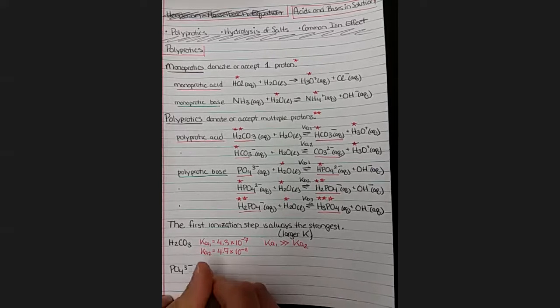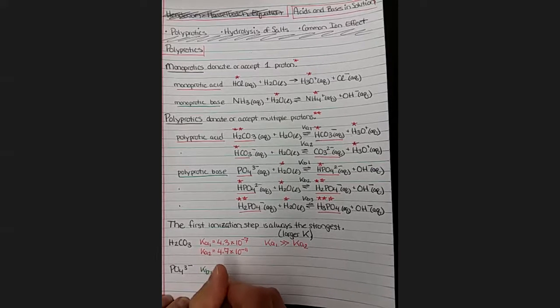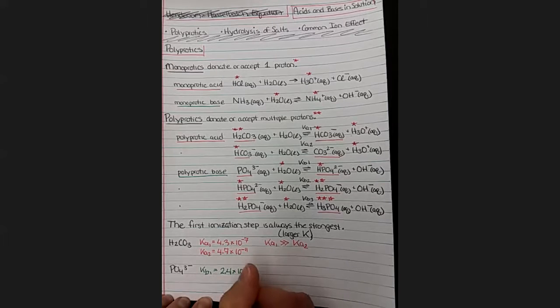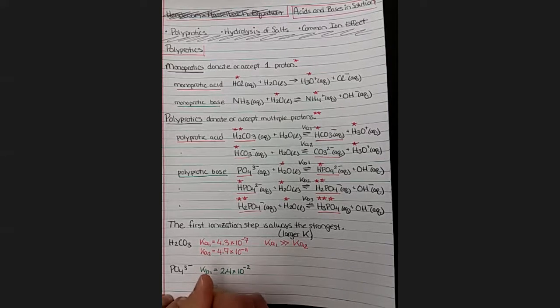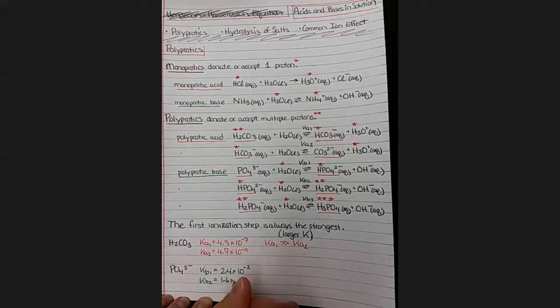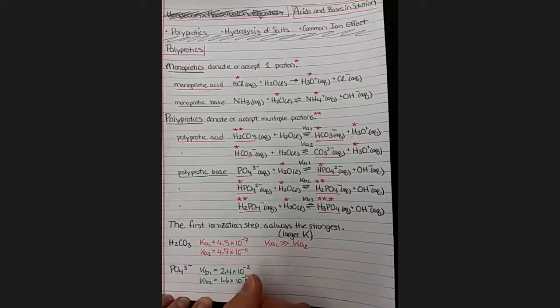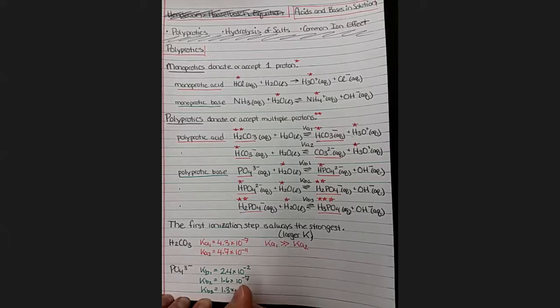And for the phosphate, the first proton we accept, the KB1 is 2.4 times 10 to the negative second. When we accept the second proton, our K constant is 1.6 times 10 to the negative 7. And for our third proton, it is 1.3 times 10 to the negative 12th. And you can see that for each successive proton we accept, the K constant gets smaller and smaller. There's less and less of it that happens.